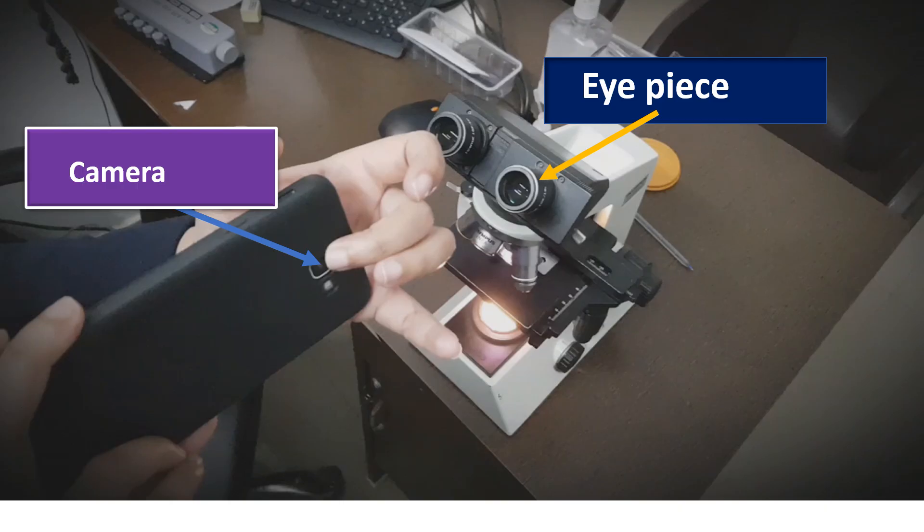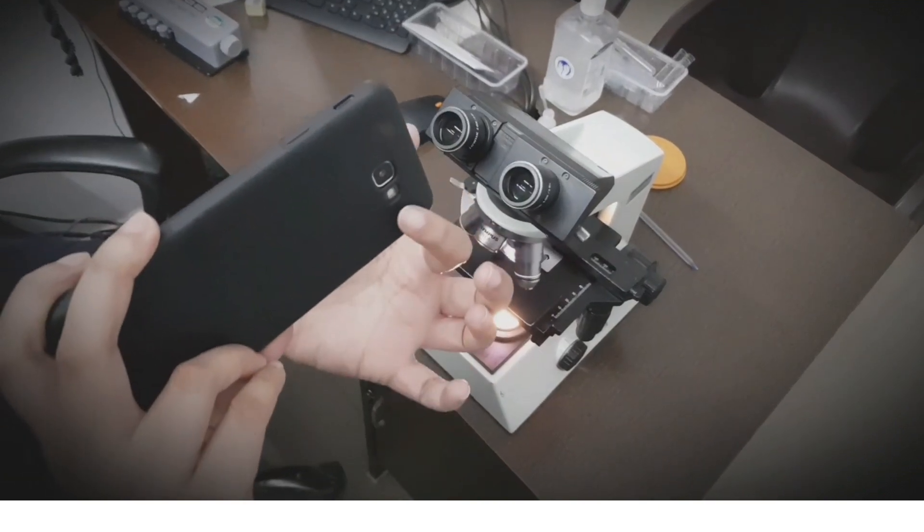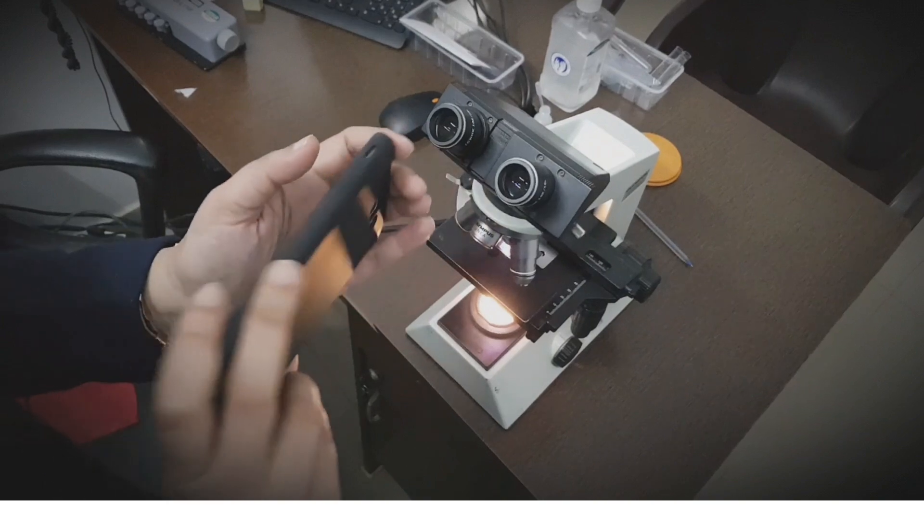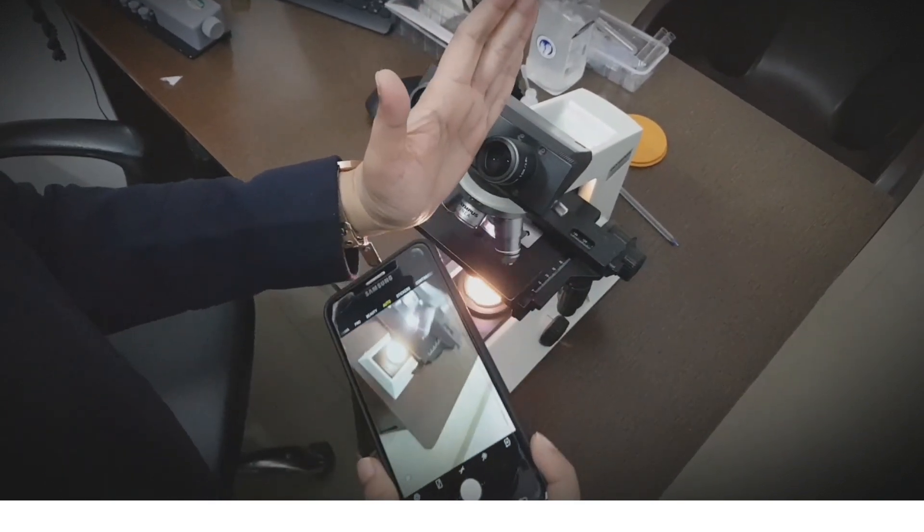So let's begin. This is the aperture of your camera and the eyepiece on which it has to be focused. Hold the phone horizontally with both hands. Use the palm or finger of both hands to support the phone.